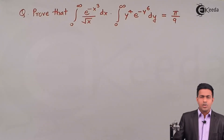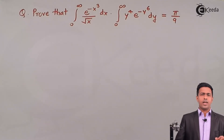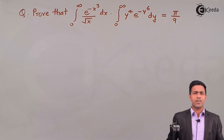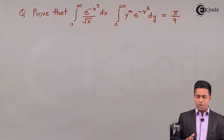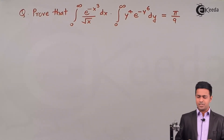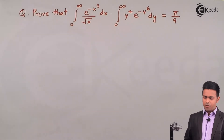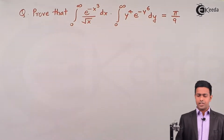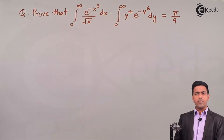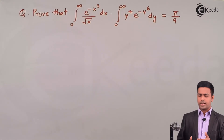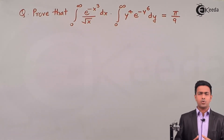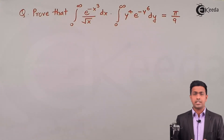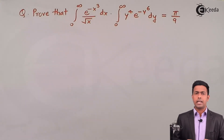Hello friends. Here we are going to learn a numerical based on the definition of the gamma function and see how to solve such numericals. The question is: prove that the integration from 0 to infinity of e^(−x³) / √x dx, multiplied by the integration from 0 to infinity of y⁴ · e^(−y⁶) dy, is equal to π/9.